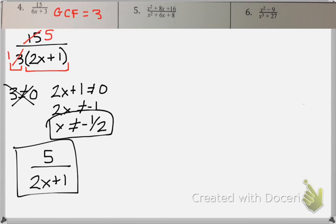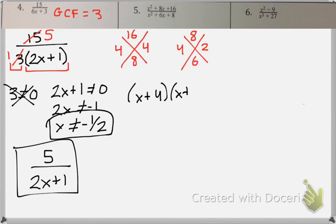For number 5, we're going to factor the top and the bottom using magic x. My numerator becomes x plus 4 times x plus 4. My denominator becomes x plus 4 times x plus 2. Let's look at our restrictions really quick.